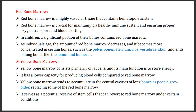Red bone marrow is important because it forms all types of blood cells, including white blood cells involved in the immune system. In children, a significant portion of their bone contains red bone marrow. As we grow, red bone marrow decreases and concentrates in certain bones — mostly flat bones such as the pelvic bone, sternum, ribs, vertebrae, and skull, as well as at the ends of long bones like the femur and humerus.